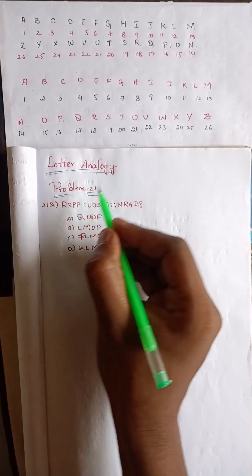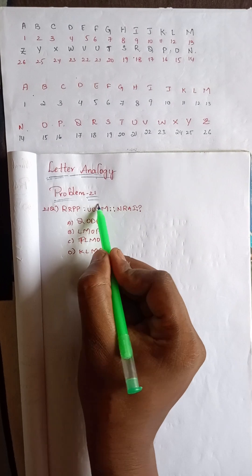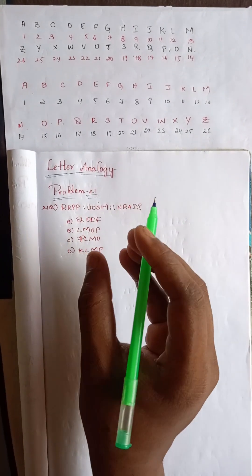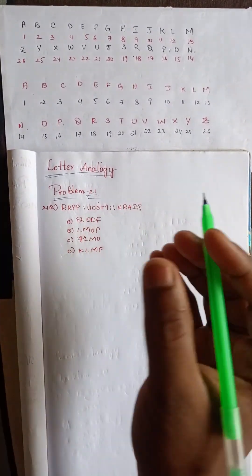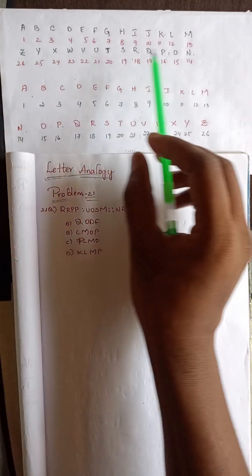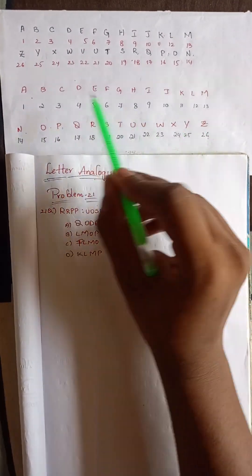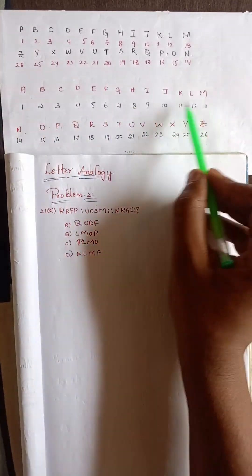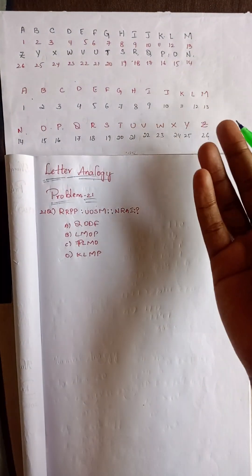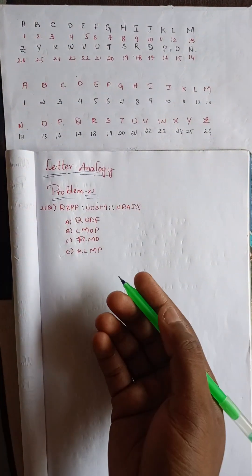Let's solve problem number 21. Before solving any type of letter analogy or letter series problems, first we have to write A to Z alphabets and then give them numberings from 1 to 26. It should be written in both reverse and normal order.